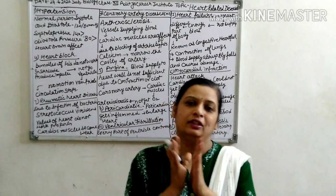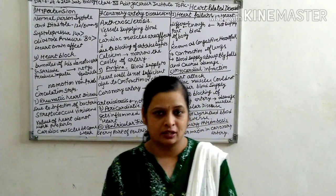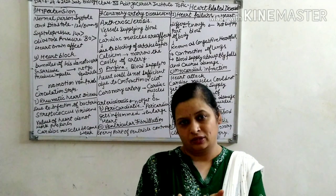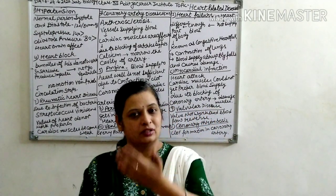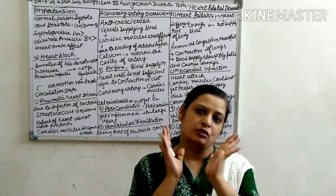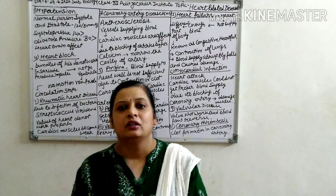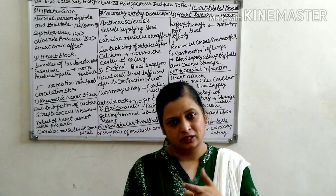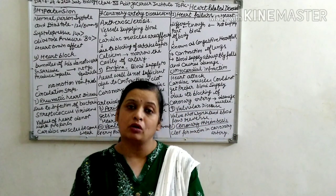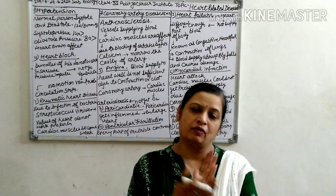Now we talk about our last topic of the circulatory system. There are so many diseases in our heart. We talked about so many heart processes, heart structure, heart internal and external parts. There are so many arteries, veins, and blood vessels. Now we talk about the diseases which are present in the heart — when the heart processes do not work properly, these diseases are developed.